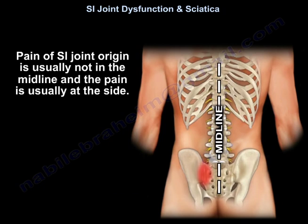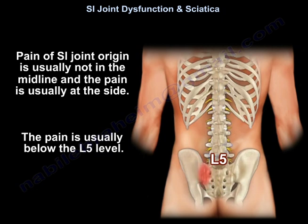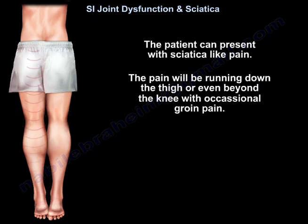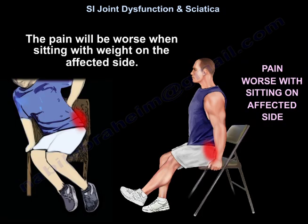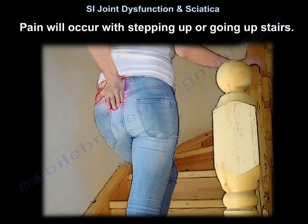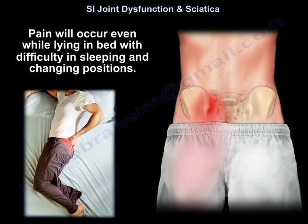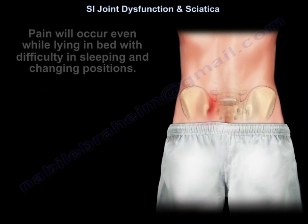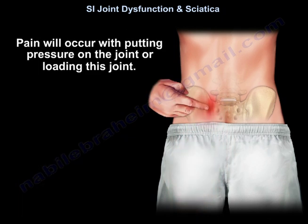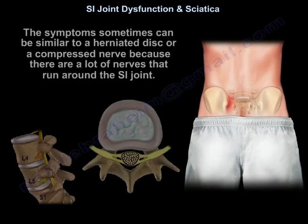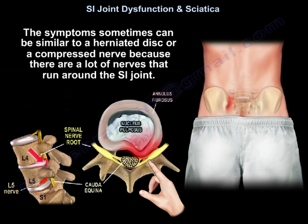Pain of SI joint origin is usually not in the midline. The pain is usually at the side and is usually below the L5 level. The patient can present with sciatica-like pain, with pain running down the thigh or even beyond the knee with occasional groin pain. The pain will be worse with sitting with weight on the affected side, with stepping up or going upstairs, when lying in bed with difficulty sleeping and changing positions, and with putting pressure on or loading the joint. The symptoms can sometimes be similar to a herniated disc or a compressed nerve because there are many nerves that run around the sacroiliac joint.